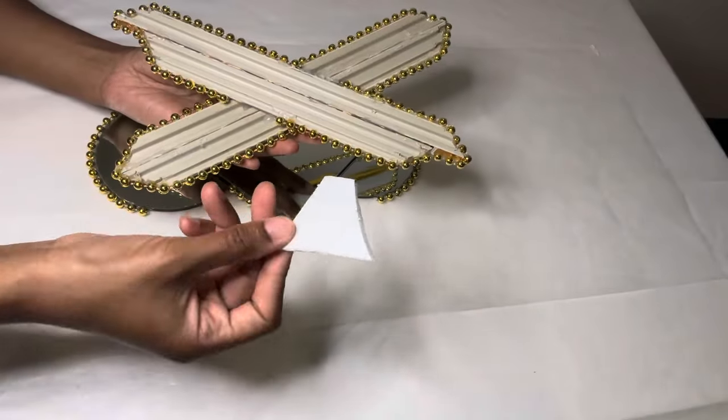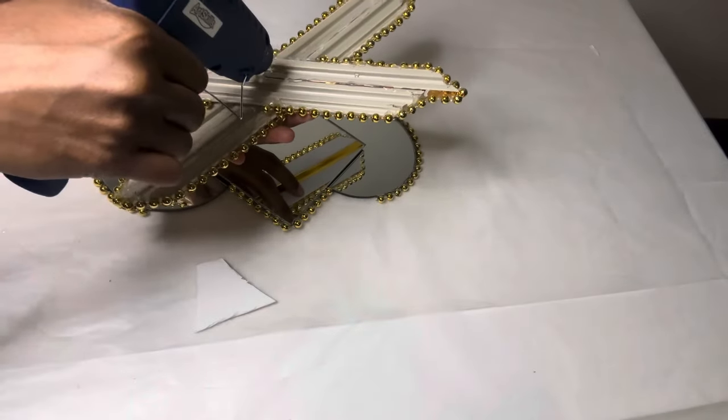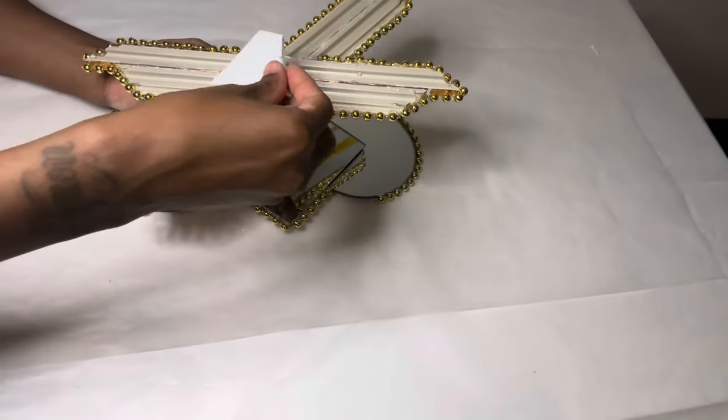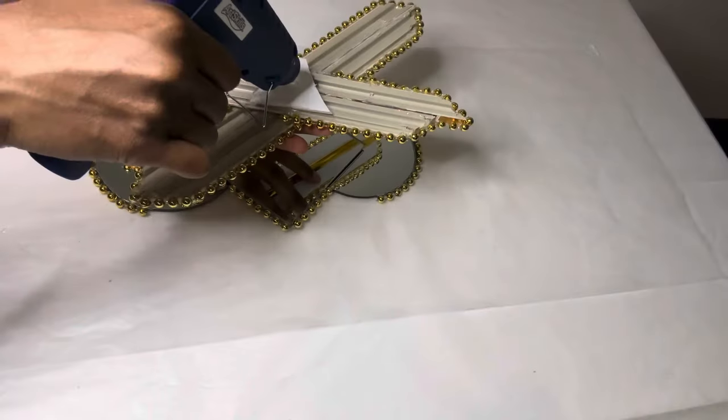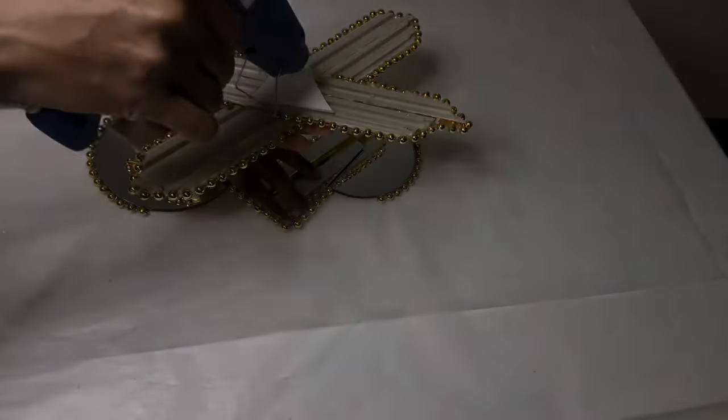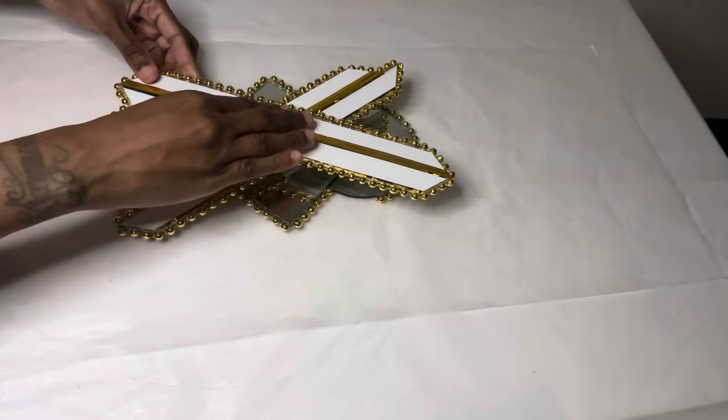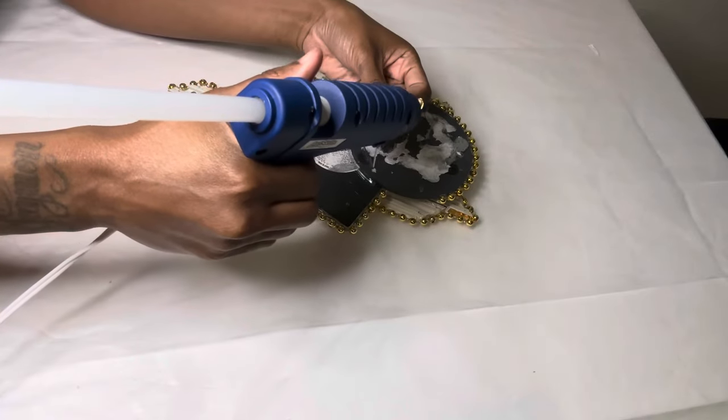I'm gluing this little piece of foam board to the back of my X so it can be easier for me to glue it to my mirrors. I'm using this sawtooth hanger to be able to hang my piece on the wall.